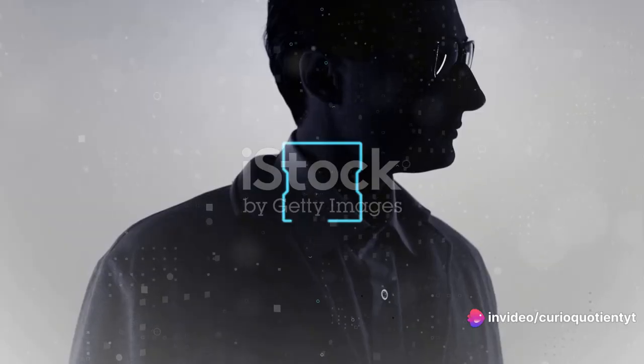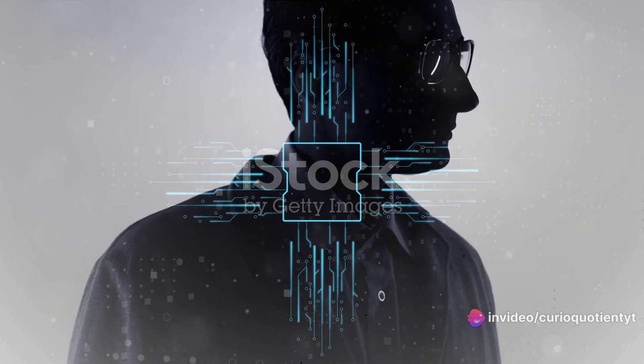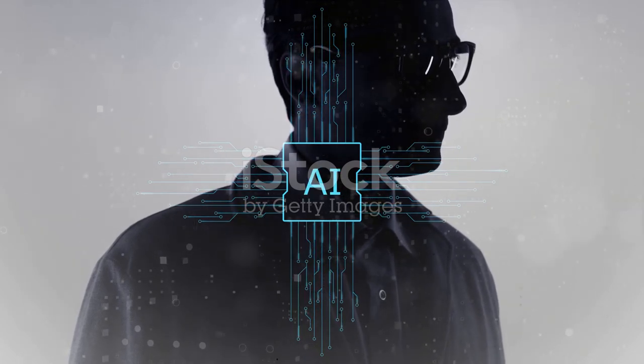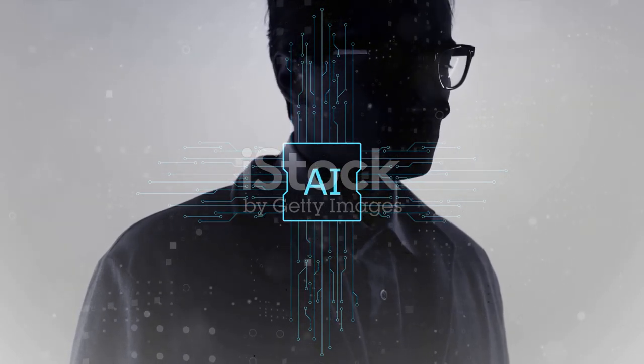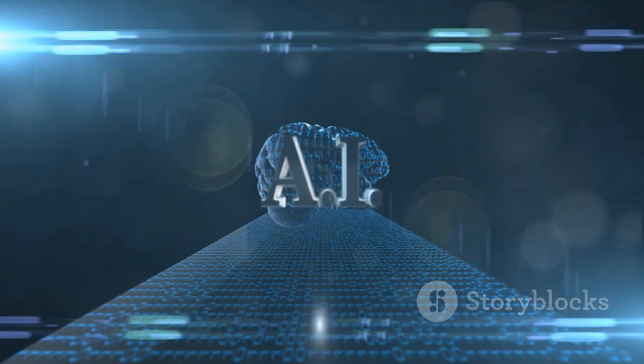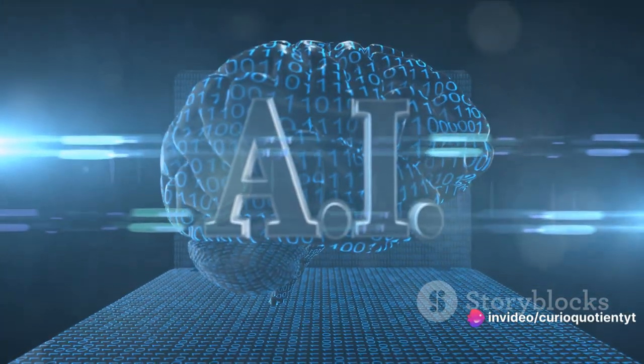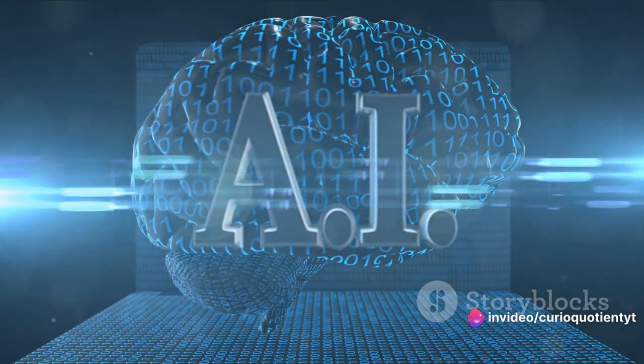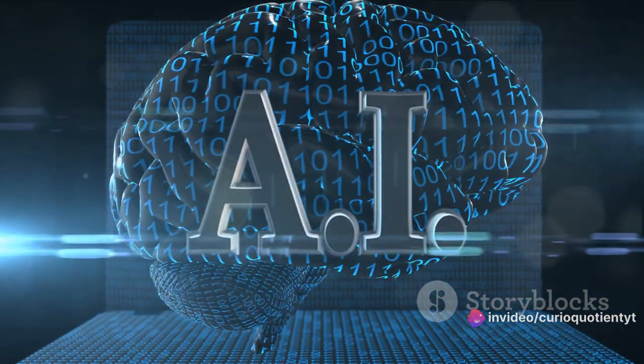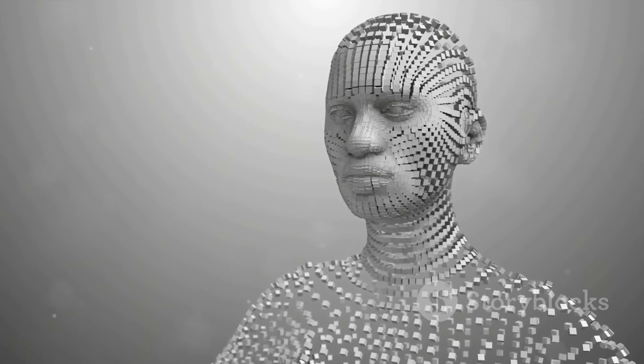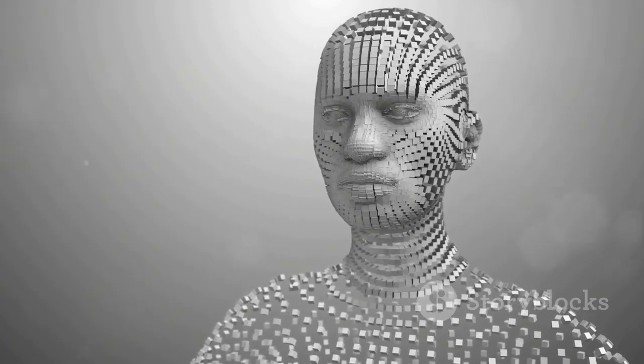Our story begins in the 1940s with pioneering minds like Alan Turing. Turing, a mathematician and cryptanalyst, was one of the first to explore the concept of machines mimicking human thought. He proposed a simple yet profound question: Could machines think like humans?